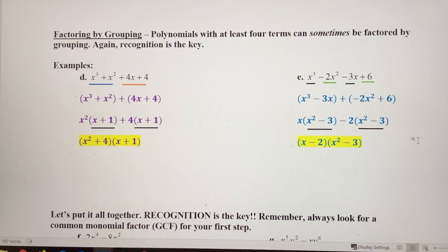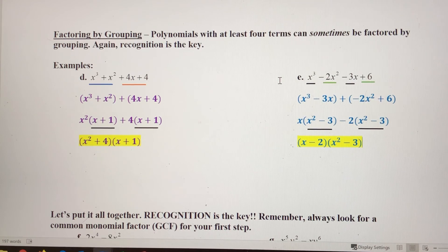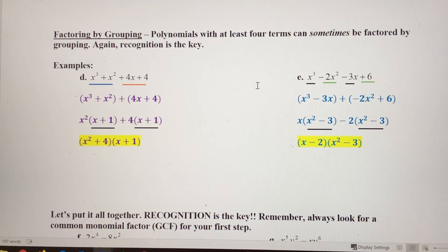Notice in neither of these problems did we have a GCF that we wanted to take out. You always want to look for that first. If there is a GCF, take it out and then try to factor by grouping. If not, you'll have to take the GCF out in one of the later steps, and it gets a little harder to recognize sometimes then.